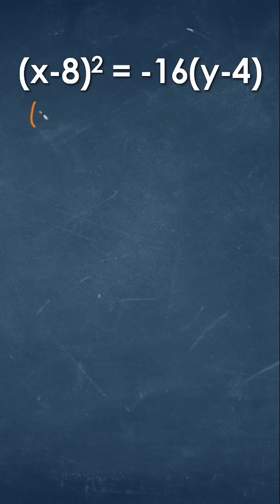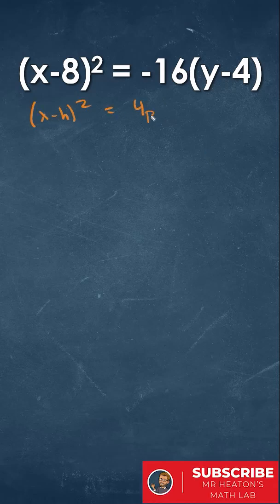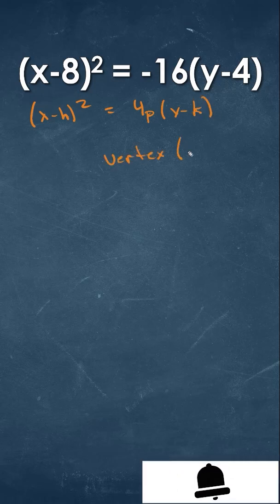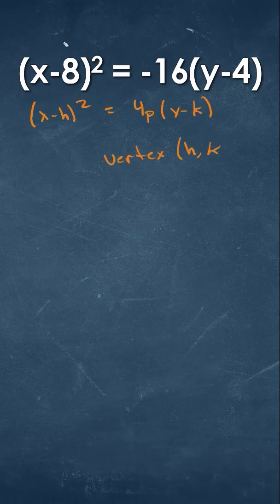To figure out the focus using the standard form of the equation, we should look at what that standard form looks like. When we see this, we have to figure out where the vertex is — the points of h and k. Our h value is going to be 8, and k is going to be equal to 4, so that's going to give us the point (8, 4).